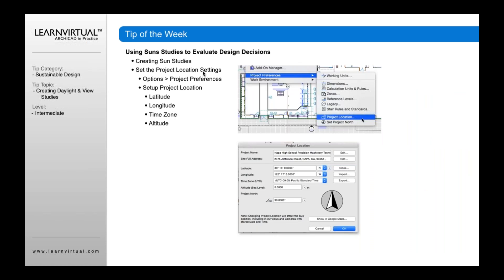You then go into your project location settings — opened via the options menu and project preferences. Once you open up that project location information, you can set not only your name and site address, but also your latitude, longitude, what city it is in the world, your time zone, your altitude from sea level, and your project north. This is really important because it allows you to set the specificity for where you are around the world, which will then give you an accurate interpretation of your sun study.